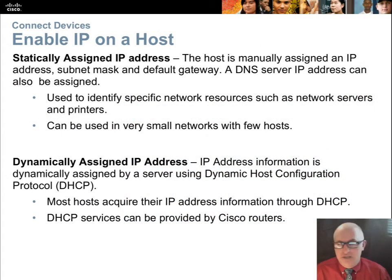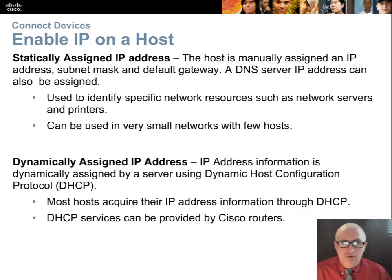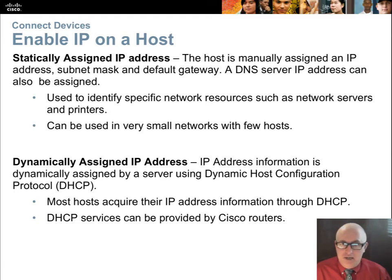You have two options for putting IP addresses on a host device — a PC, a printer, or a phone. You could do it statically, meaning you manually go to each device physically and type in the information: an IP address, a subnet mask, a default gateway, perhaps a DNS server. This typically is not done because it doesn't scale well — it's labor intensive and error prone.